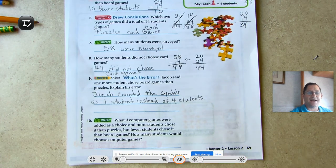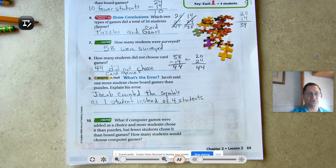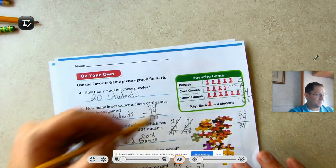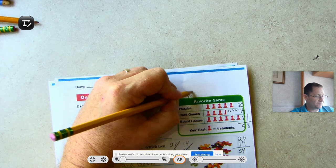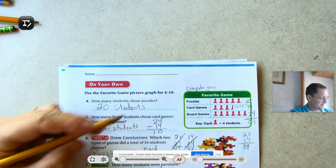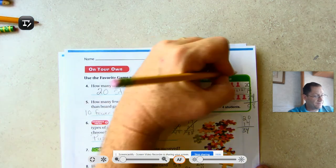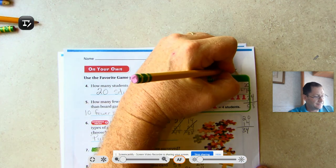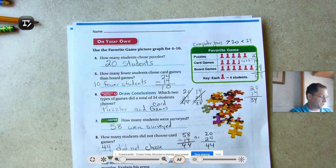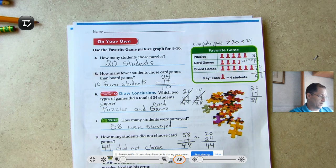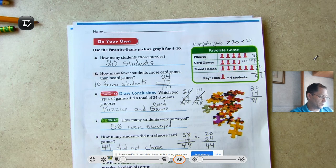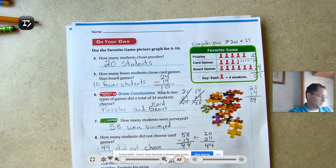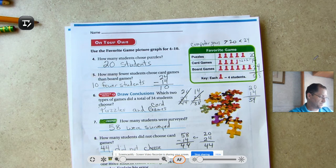Number ten: What if computer games were added as a choice? And more students chose it than puzzles, but fewer students chose it than board games. How many students would choose computer games? So computer games, we had computer games added to this table. And it said more than puzzles. So we know it would have to be greater than 20, but less than 24. So 21, 22, or 23 students.